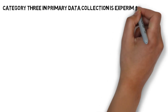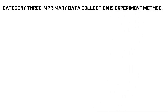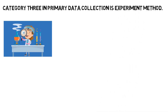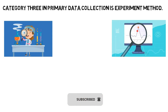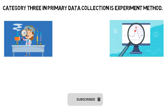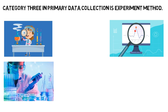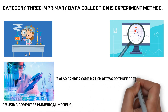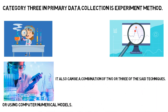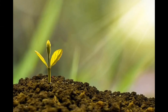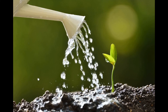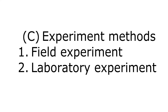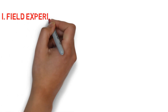Category three in primary data collection is experiment method. Experiments carried out for the purpose of collecting data are carried out in the laboratory, in the field, or using computer numerical models, or a combination of these techniques. For example, wondering whether a plant grows if you mist it with water. We are going to study two data collection experiment methods.